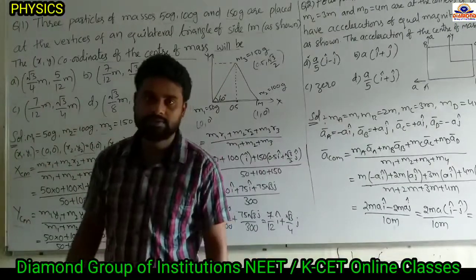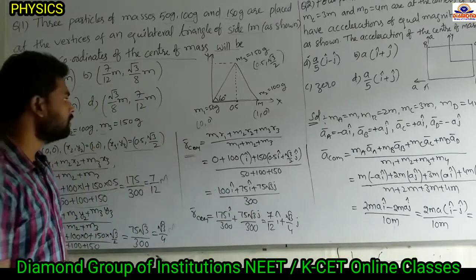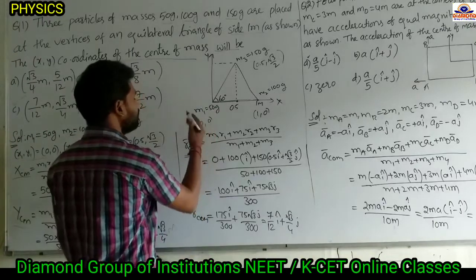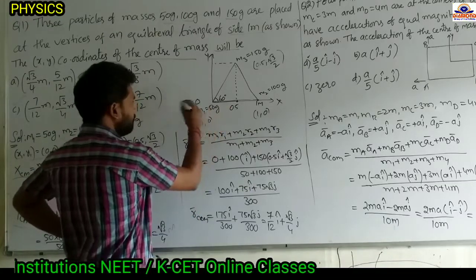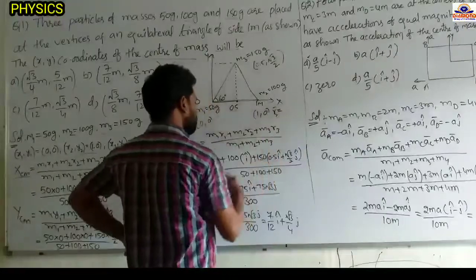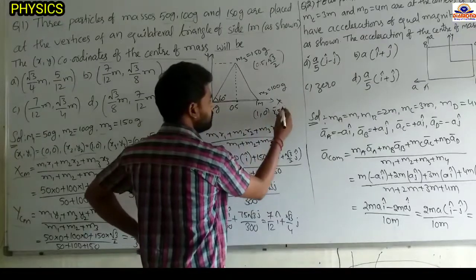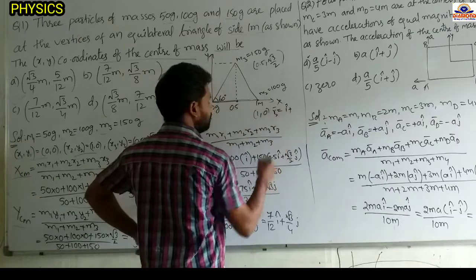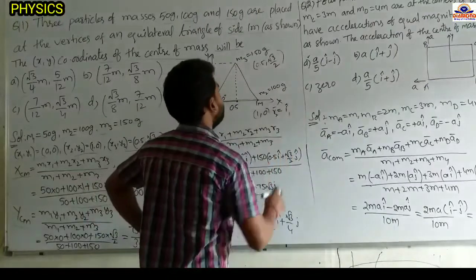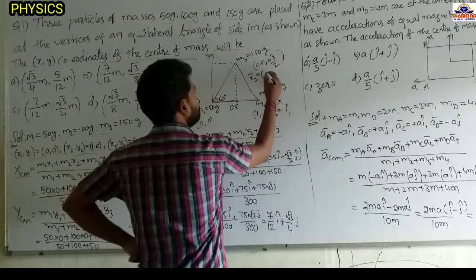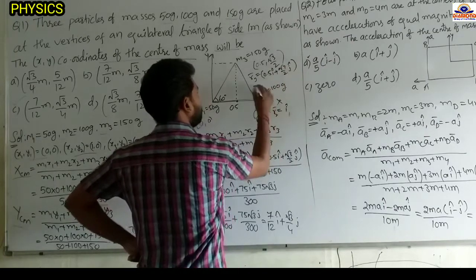Now by using the position vector we can also find the center of mass — second method. Position vector r1 = 0 (at the origin). r2 = 1·î (x=1, y=0, so just î). r3 = 0.5î + (√3/2)ĵ. These are the position vectors of the three particles.